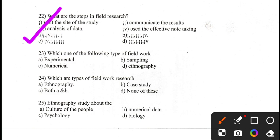Question number 23. Which one of the following is a type of field work? Experimental, sampling, numerical, or ethnography. There are various types of field works — the correct answer is ethnography. Ethnography is a type of field work.